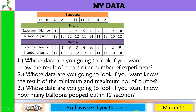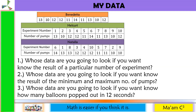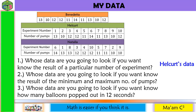Now let us answer the following questions. Whose data are you going to look if you want to know the result of a particular number of experiment? If we are looking for a particular number of experiment, it would be best to look at Holkert's data, because in his data, the experiment number is arranged in ascending order.